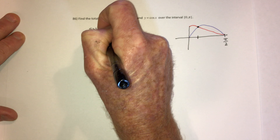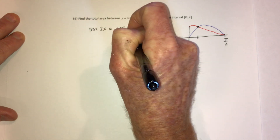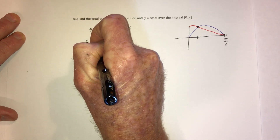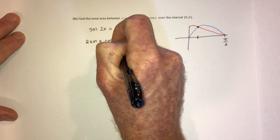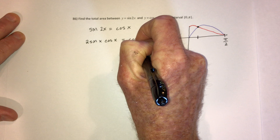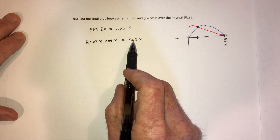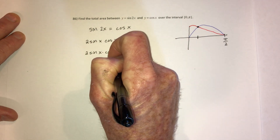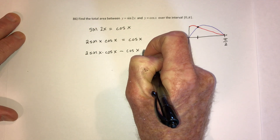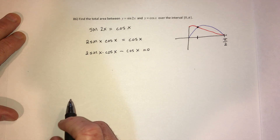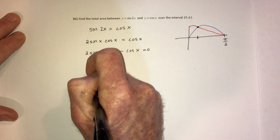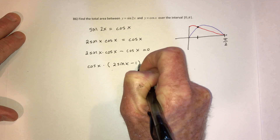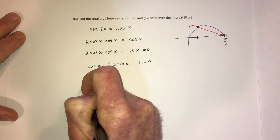Where does sine of two x equal cosine of x? We should use the trig identity: sine of two x equals two times sine of x times cosine of x. So when does two sine x cosine x equal cosine x? Subtract cosine x from both sides: two sine x cosine x minus cosine x equals zero. Then factor out a cosine: cosine of x times (two sine of x minus one) equals zero. Set each factor equal to zero.